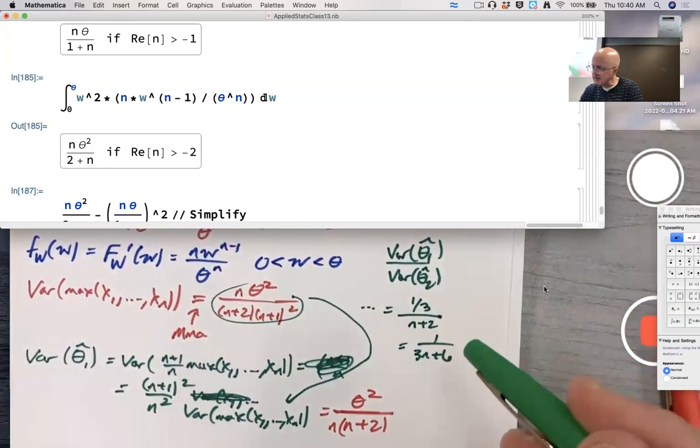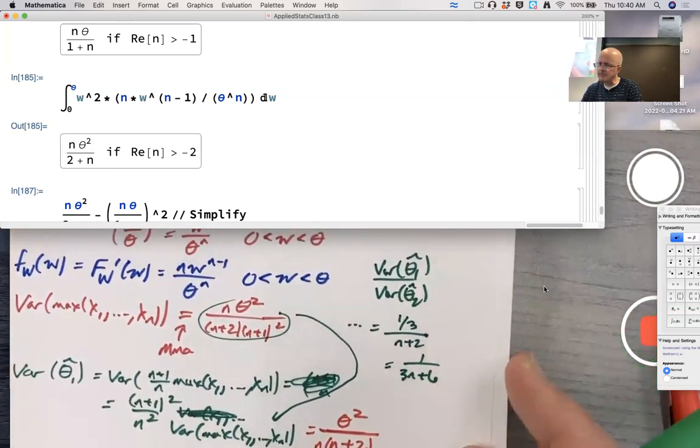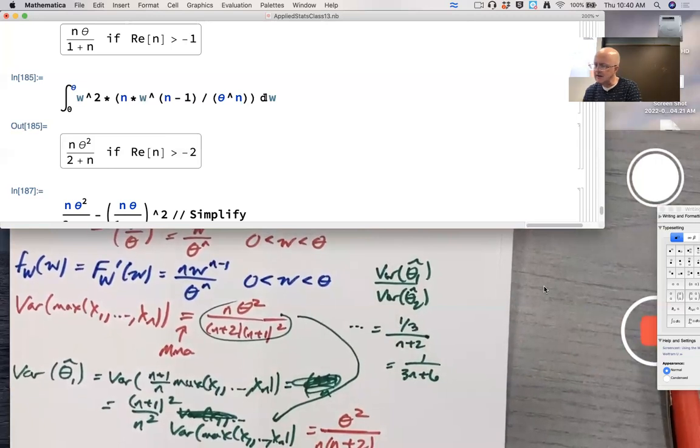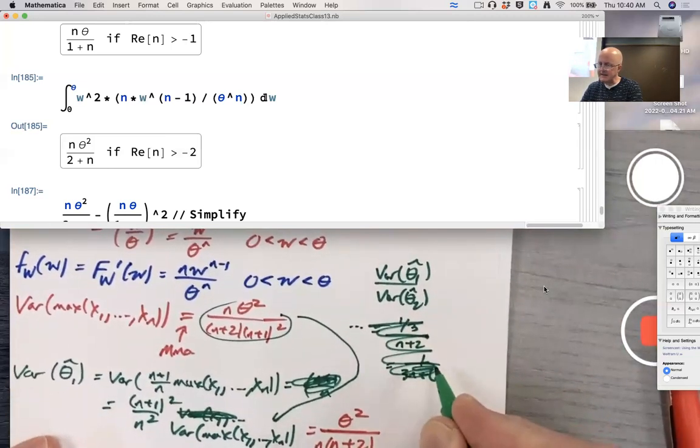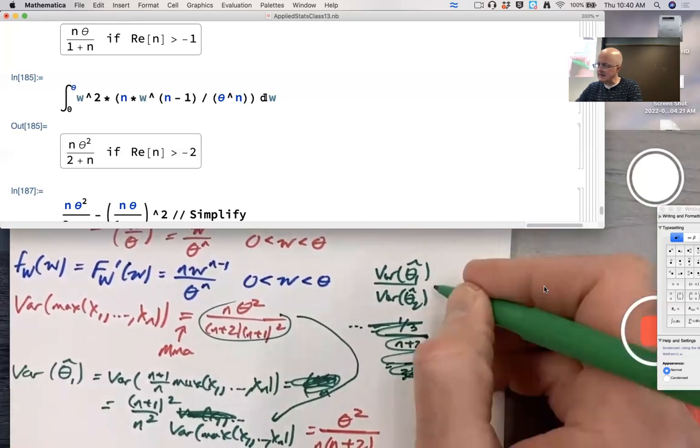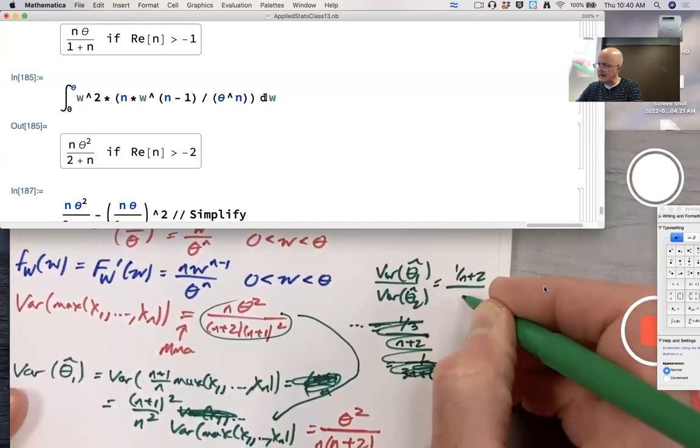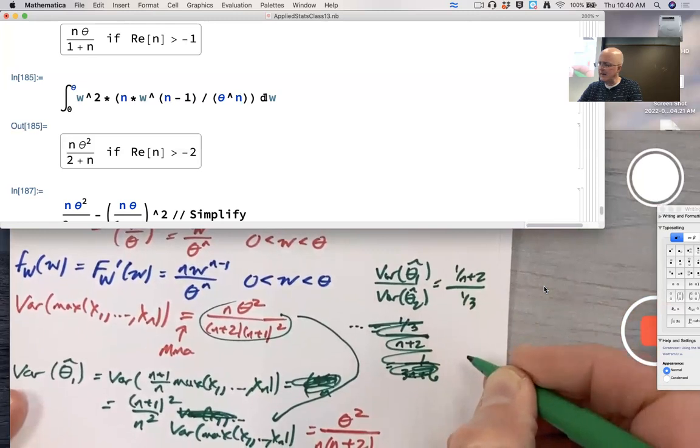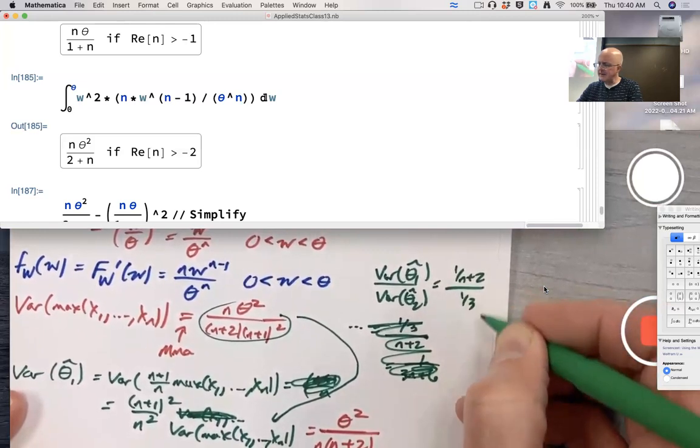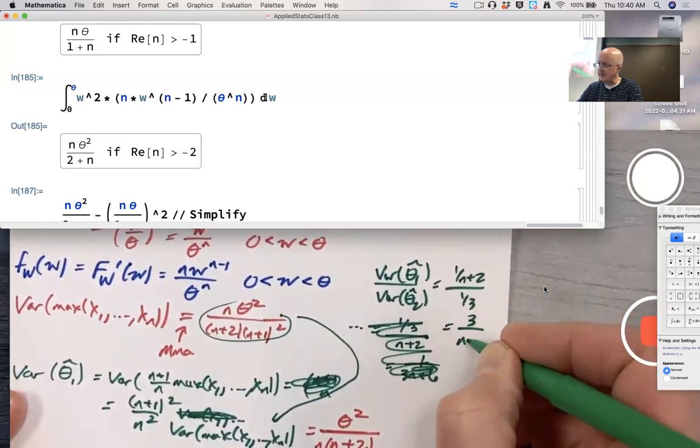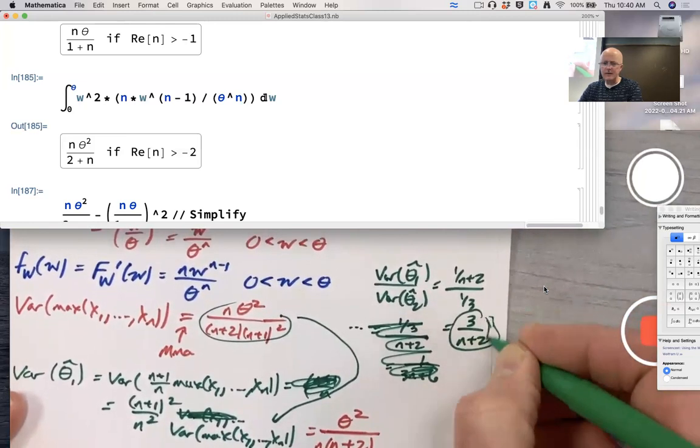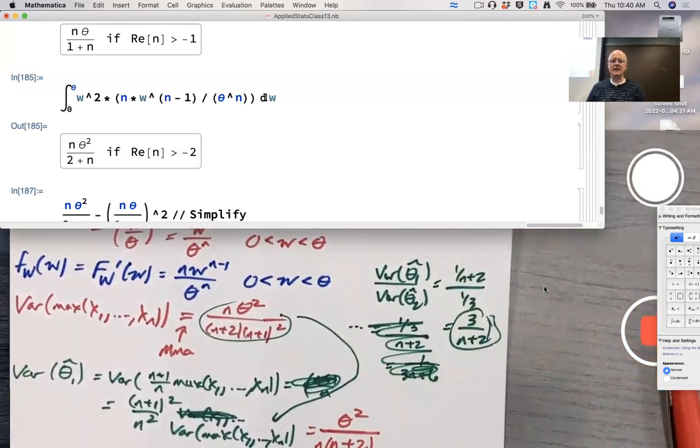What is it on top? Oh, okay, I did the other way around, I'm sorry. Okay yeah that's wrong, I mixed up theta 1 hat and theta 2 hat. Multiply the top and bottom by three, it's three over n plus two. And that's going to be less than one if n is bigger than one. So what's the punchline? The punchline: theta 1 hat's better than theta 2 hat.